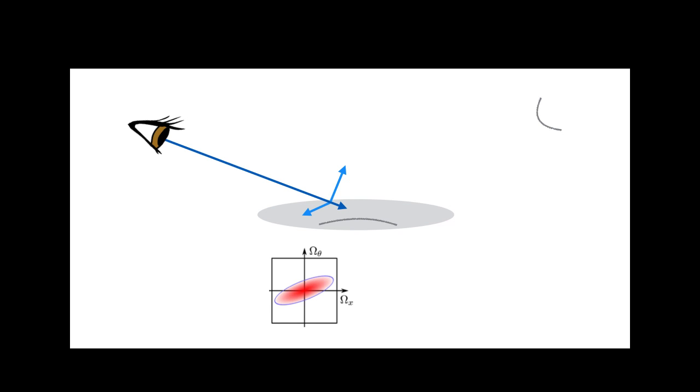For indirect bounces, we update the covariance structure to account for the reflection, and then continue propagation.